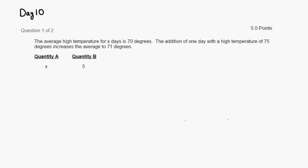Let's look at Day 10, problem number one. The average high temperature for X days is 70 degrees. The addition of one day with a high temperature of 75 degrees increases the average to 71 degrees.